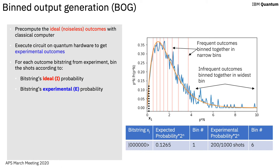Consider the all-zero bit string. Suppose our classical computer tells us the expected probability is 0.1265. We look at which bin this probability falls into according to the expected probability — it falls into bin 1. From our experiment, we put however many shots we measured of that bit string into the first bin. Suppose that number is 200 out of 1,000 shots, so we add 200 shots to bin 1. The second method bins by experimental probability. In this case, we ignore the expected probability of 0.1265 and only look at the experimental probability of 200 out of 1,000 shots, which would place our shots into bin 6.